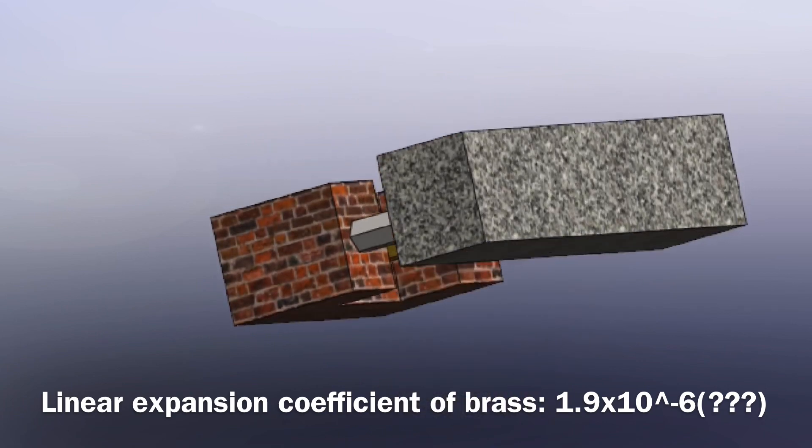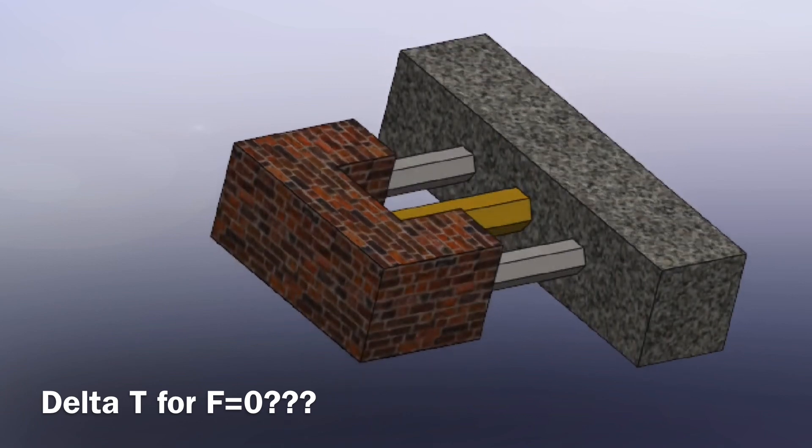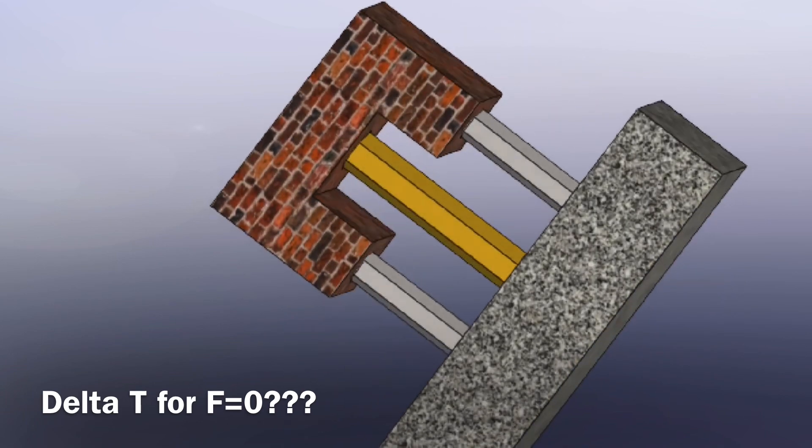Now, I'm sure you don't find this very interesting as you encounter this almost on a daily basis. However, have you ever considered how much you may need to change the temperature by so that the force on the central brass rod is equal to zero?